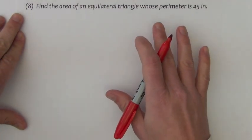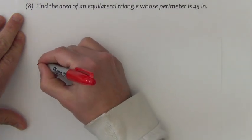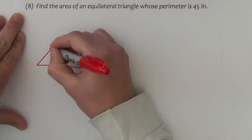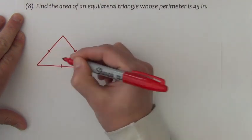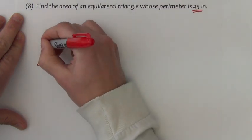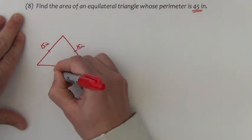Next problem asks us to find the area of an equilateral triangle whose perimeter is 45 inches. So best I can, I'm going to draw an equilateral triangle, and if it's equilateral and the perimeter is 45, that means all the sides measure 15 inches, as they're all going to be the same.